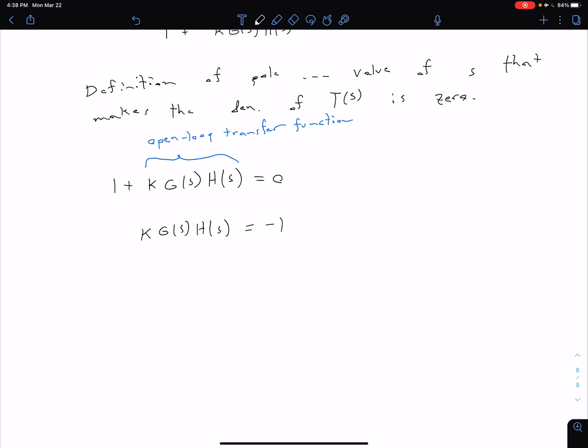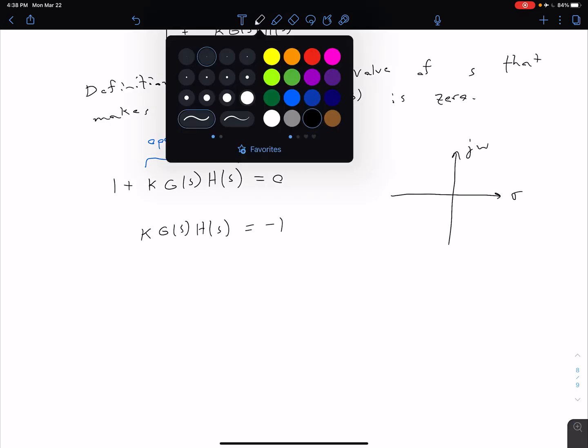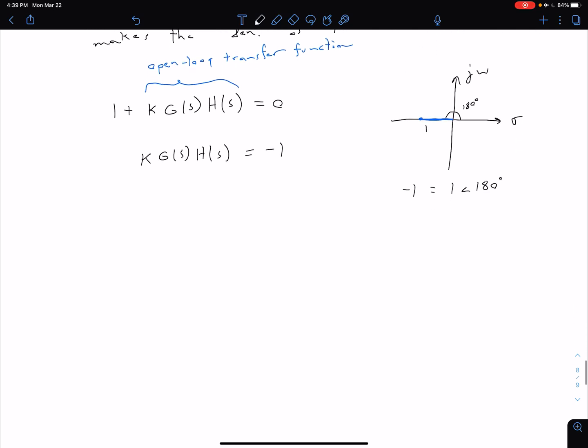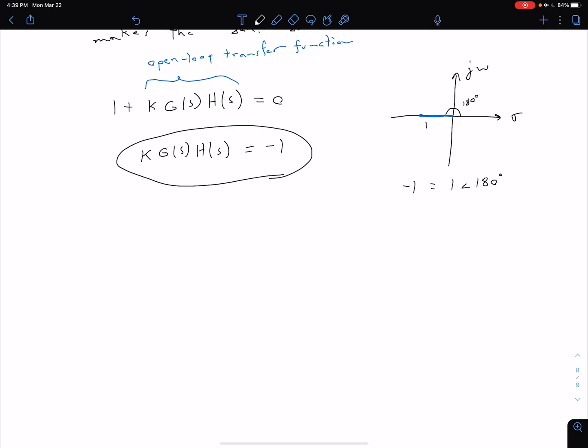So let's for a minute consider what our negative one looks like in the S plane, in our complex plane. We have our imaginary axis J omega and our real axis sigma. And if we have a negative one, then we're going to be at some point over here. If we think about what this is in terms of our magnitude and our angle representation, we're going to have a magnitude of one and an angle from our real axis of 180 degrees. So this negative one can also be represented as one angle 180. And that angle doesn't have to be 180. It could be any odd multiple of 180.